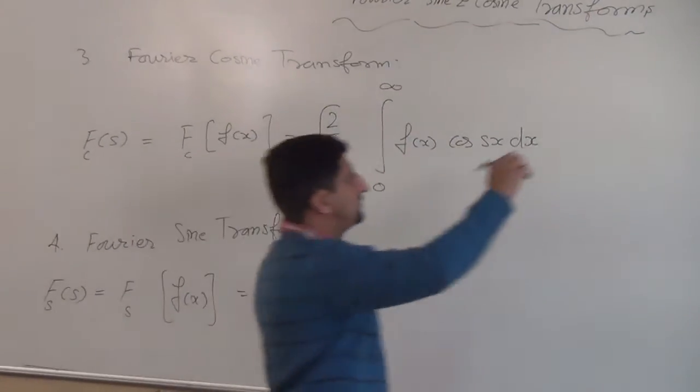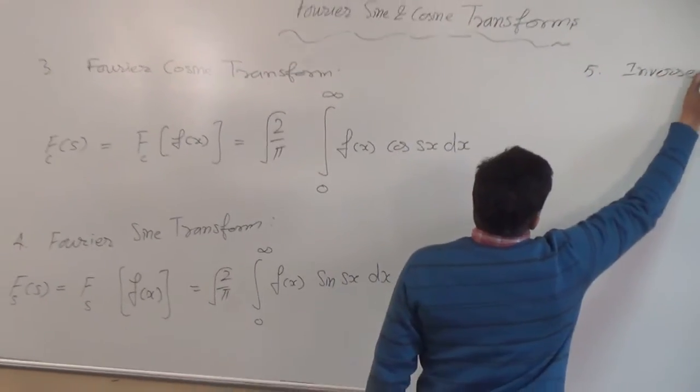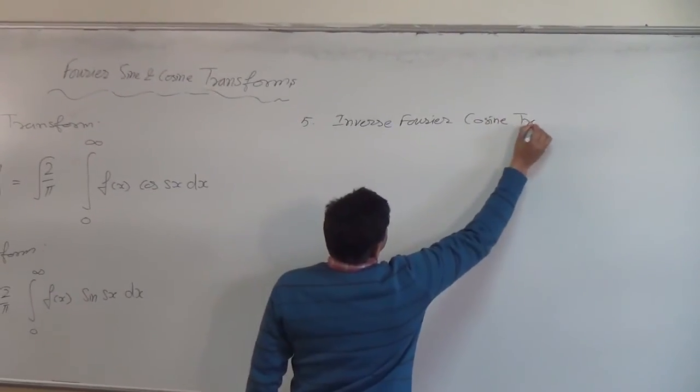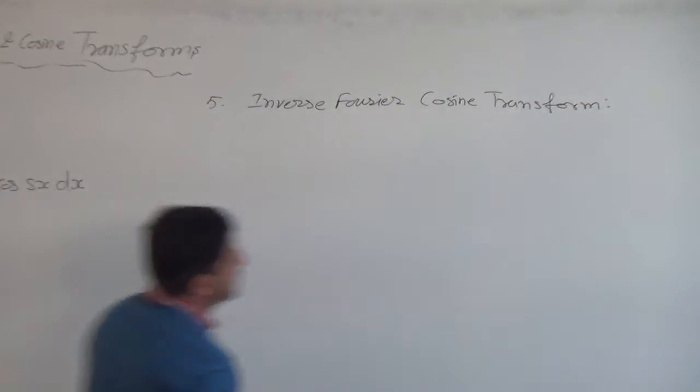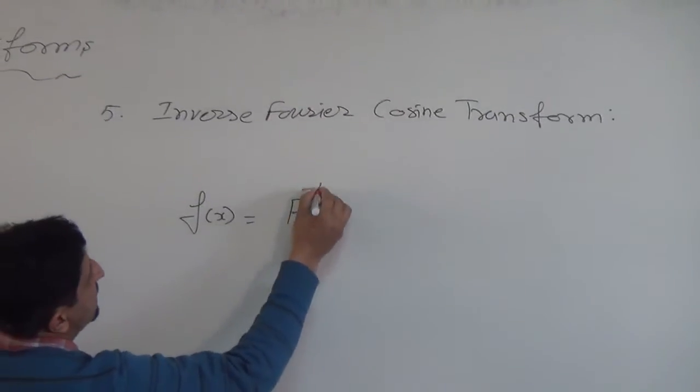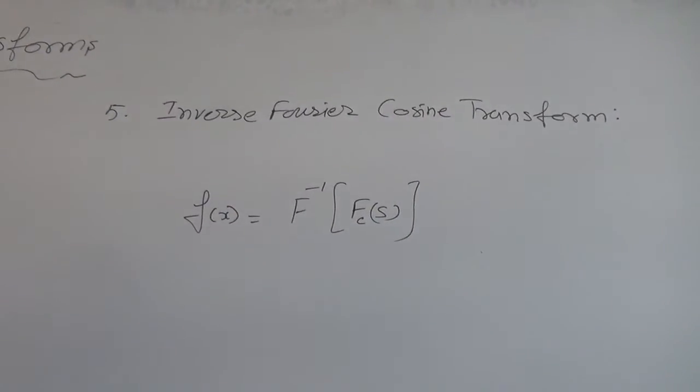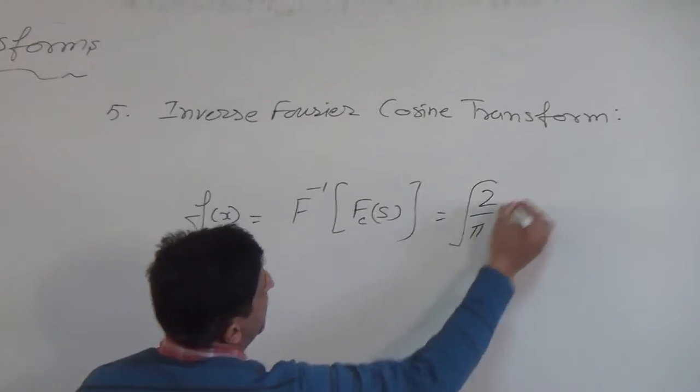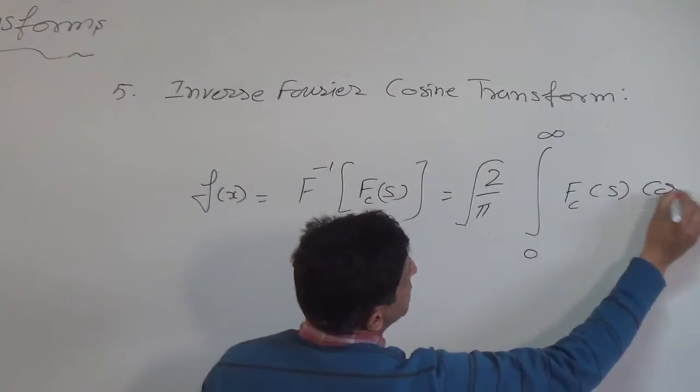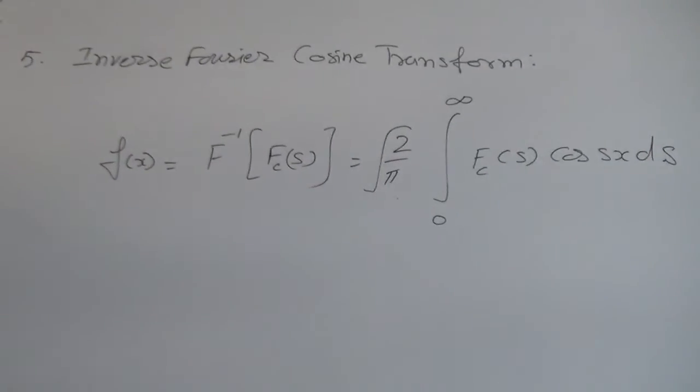Similarly, we can have the inverse of these. Fifth formula: inverse Fourier cosine transform. Obviously, it is f(x) and is equal to inverse of F_c(s). Inverse of F_c(s) is root of 2 upon pi under integral 0 to infinity F_c(s) cos(sx) ds. This is inverse Fourier cosine transform.